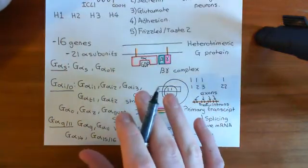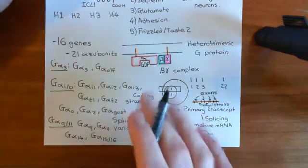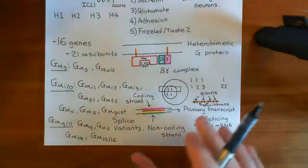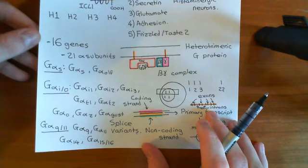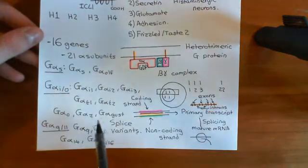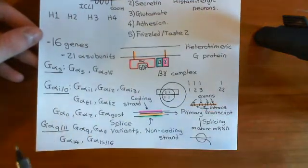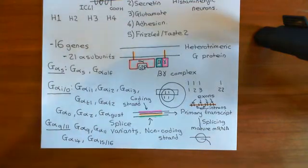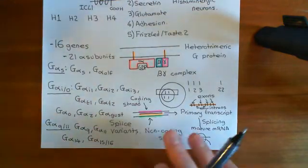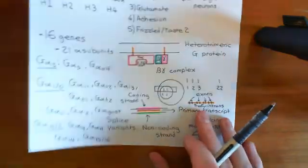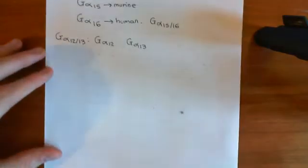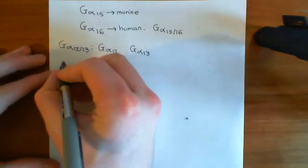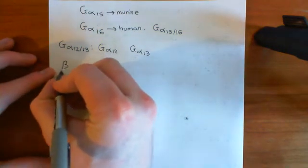We've talked about the 16 different genes for alpha subunits. We're not going to talk about all the different splice variants, because pretty much the different splice variants do the same thing as each other. So if you have one gene that's got multiple splice variants, its splice variants pretty much all do the same thing, at least as far as we can tell. So we'll now talk about the beta subunits.